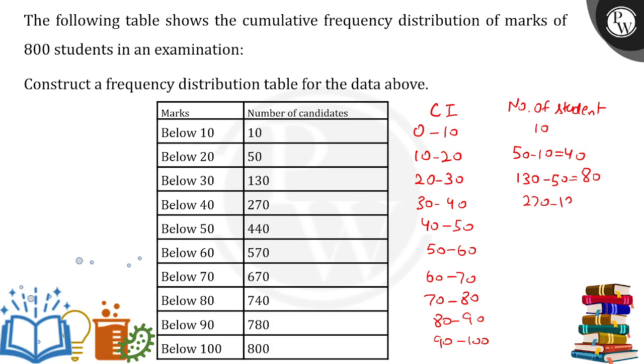minus 130, this comes out to be 140. Next one, 440 minus 270, we have 170. Then we have 570 minus 440, we have again 130. We have 670 minus 570, we have 100.